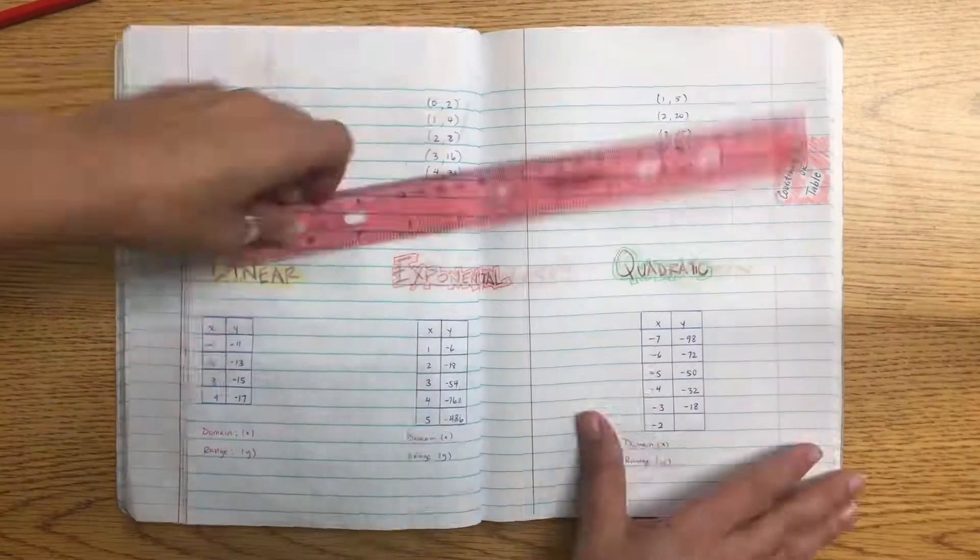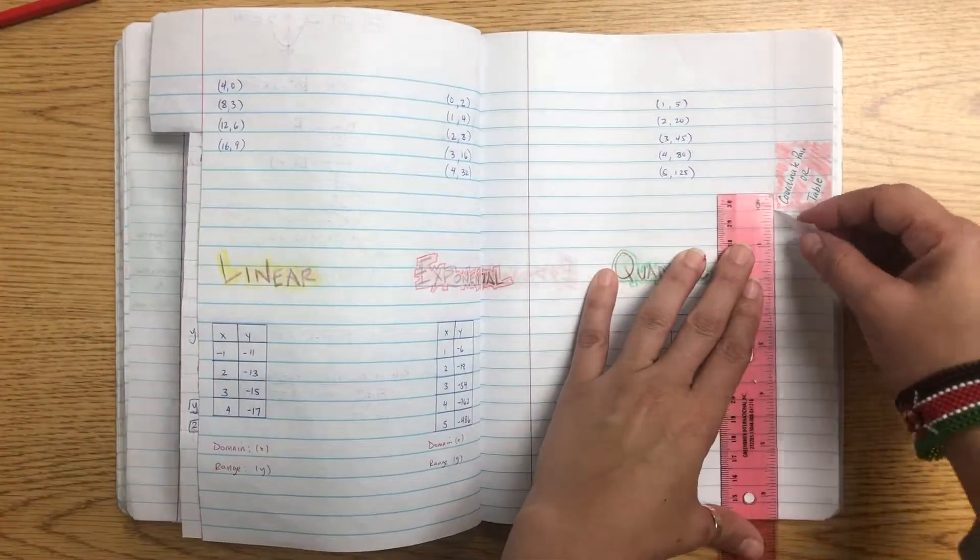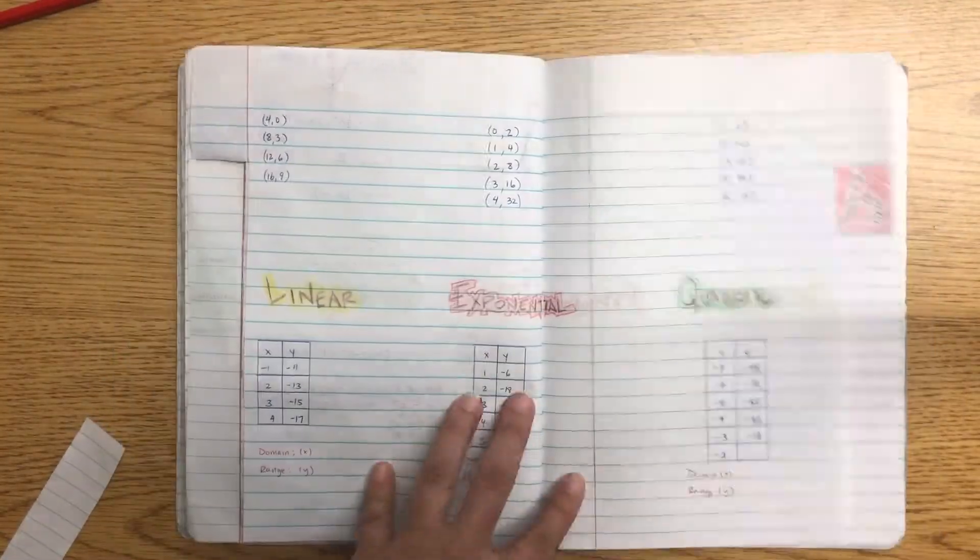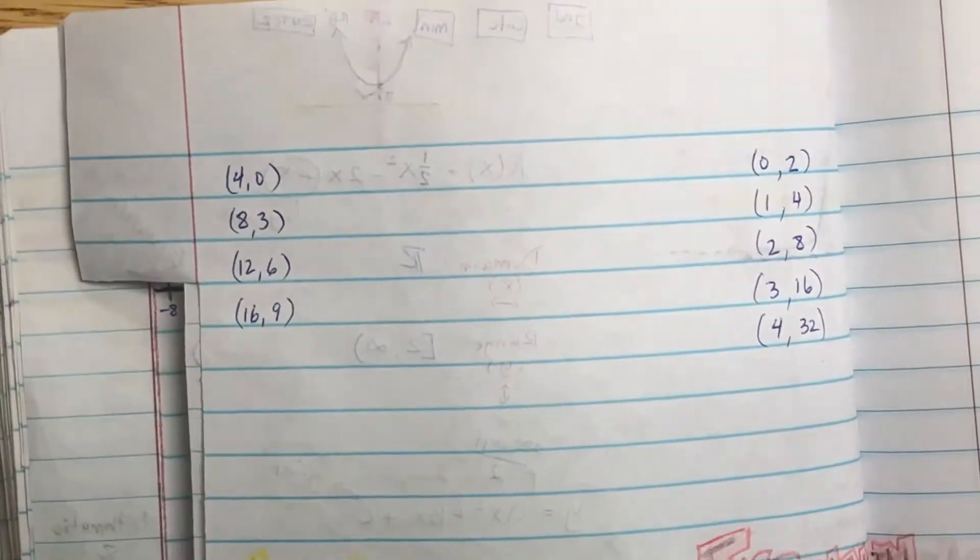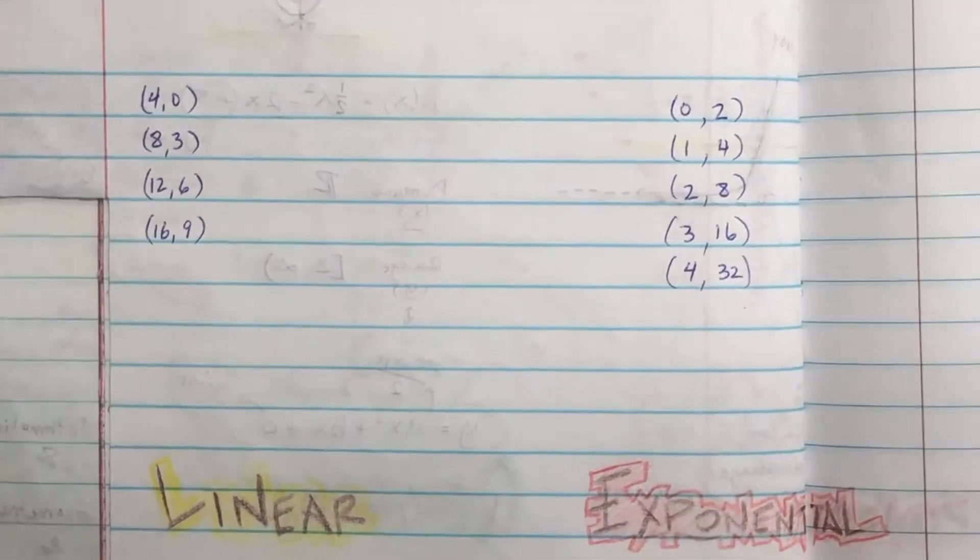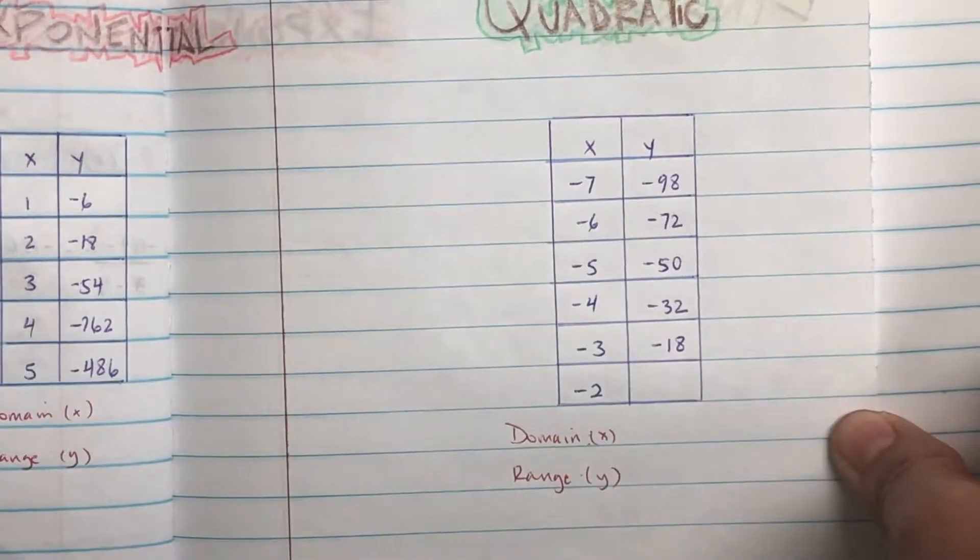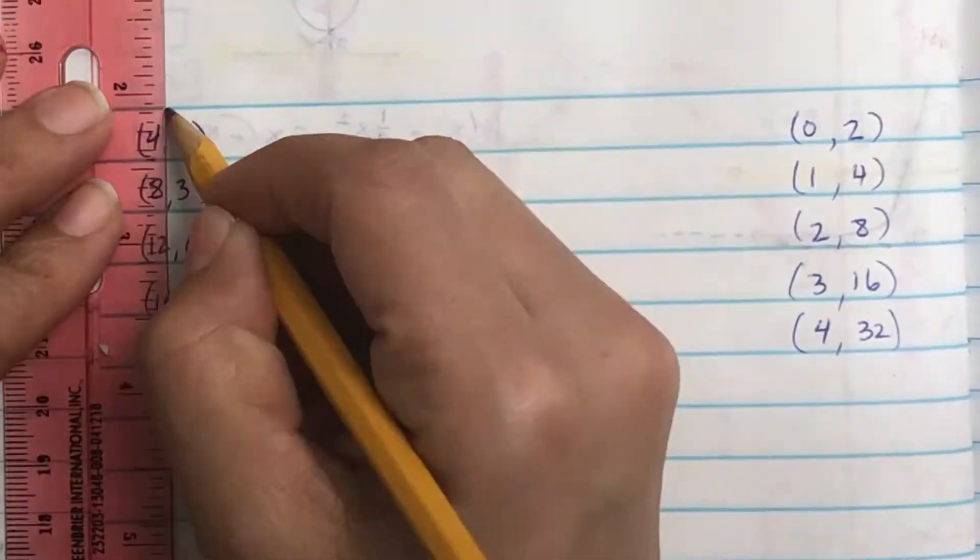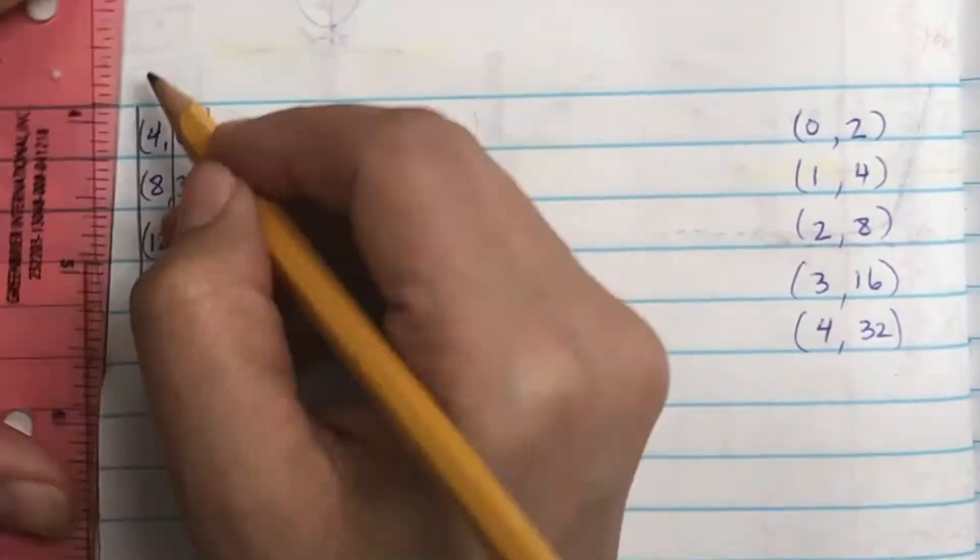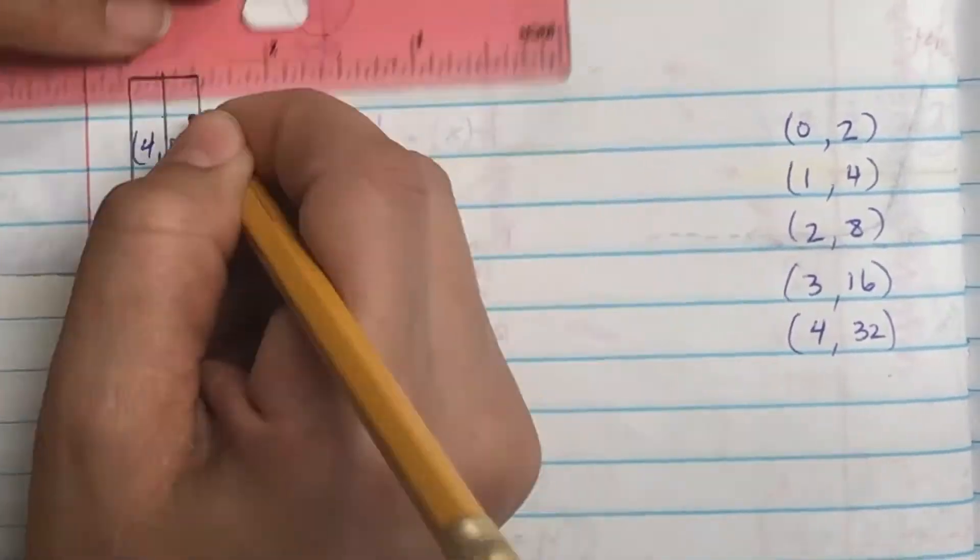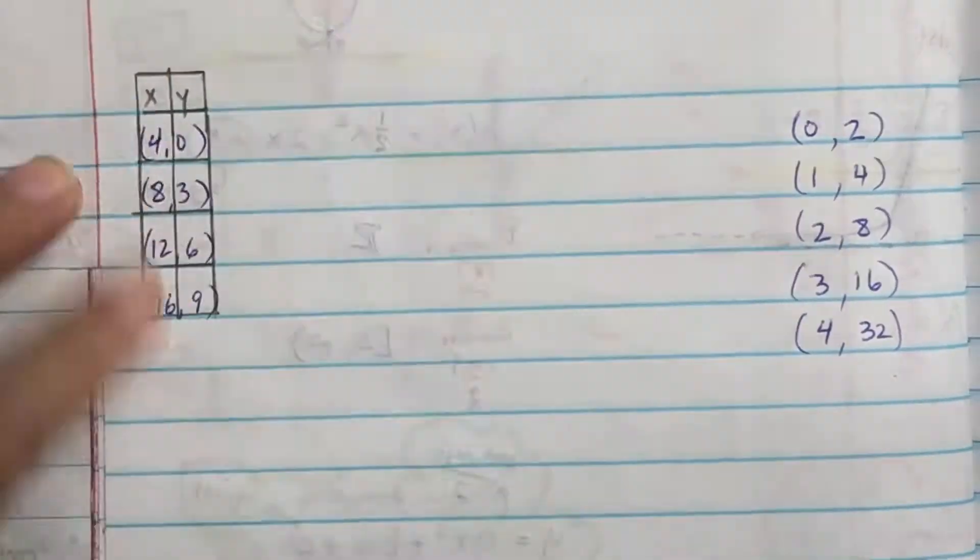Look at comparing functions with coordinate pairs or tables. Make a tab, title it 'Comparing Coordinate Pairs or Tables,' and copy those down. The cool thing about coordinate pairs is it's really a table. I wrote them vertically so I could just do the table real quick. The first one's your x value, the next one's your y value.